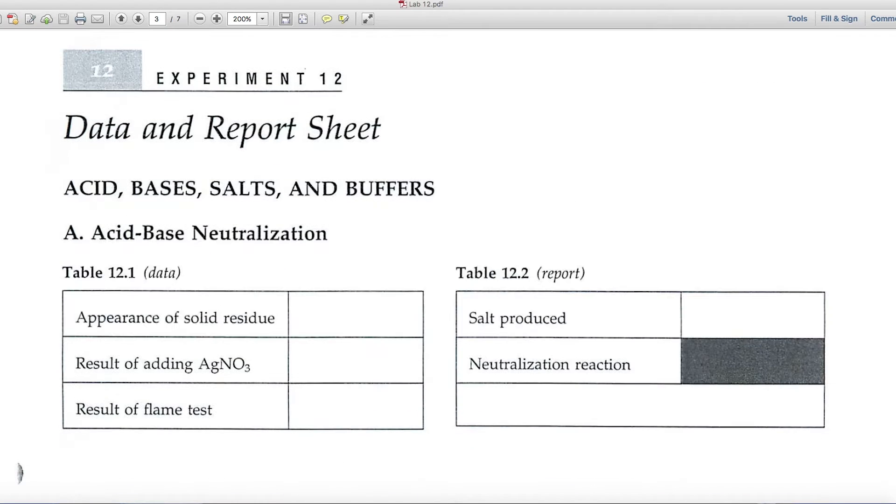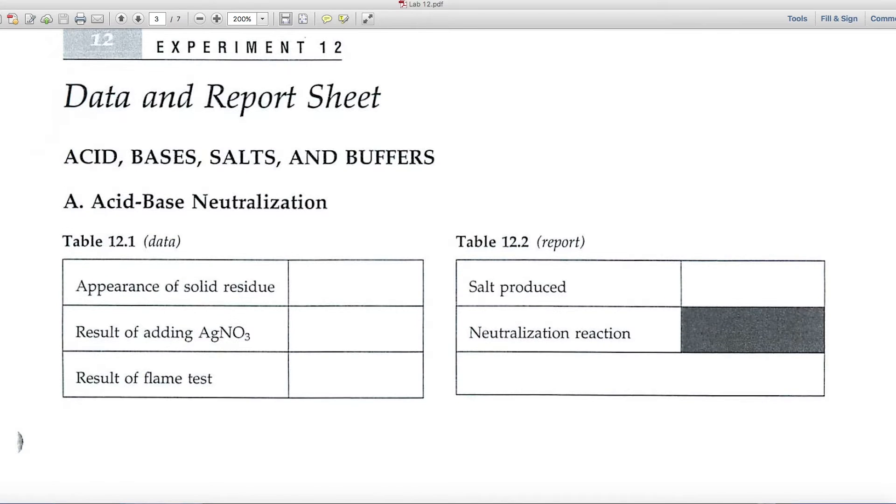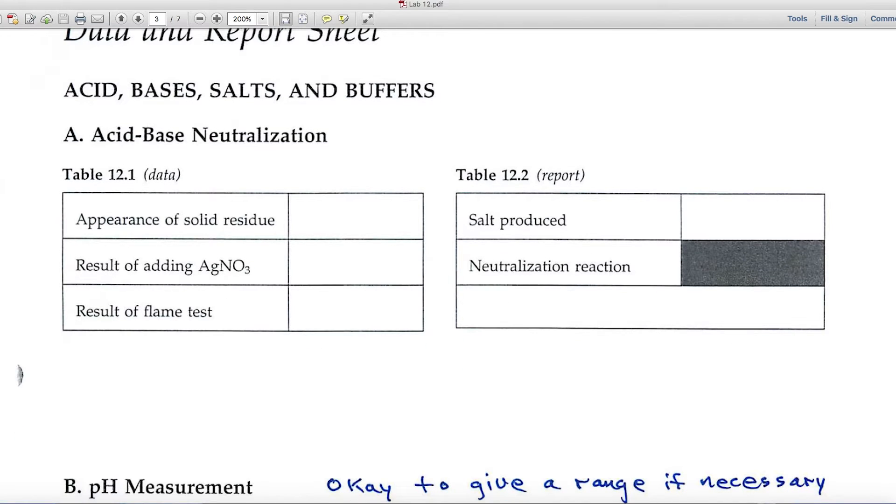Let's have a look at the data and report pages. In Part A, you're looking at acid-base neutralization. The data table asks for the appearance of the solid residue, result of adding silver nitrate.